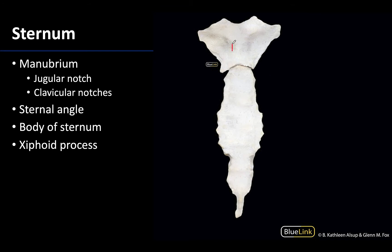You will have the manubrium, which is this handle region right here — this will be the most superior. Then there is the body of the sternum, and then you will have the variably shaped xiphoid process, which like I mentioned is considerably variably shaped, so you could have it be considerably smaller than what we're seeing on this particular donor.